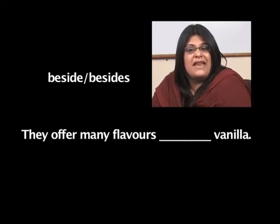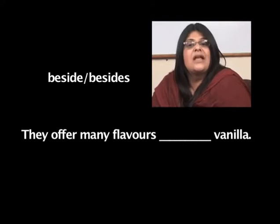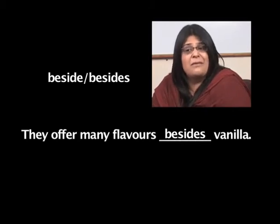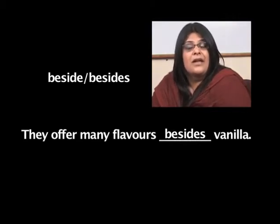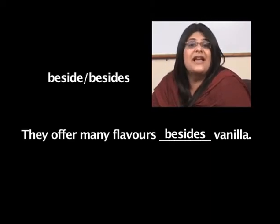Next: 'They offer many flavors dash vanilla.' The options are beside and besides. The correct answer would be besides, because beside is a preposition that means next to, but besides means in addition to or other than. We can imagine an ice cream stall with many flavors — not just vanilla. They offer many flavors besides vanilla.